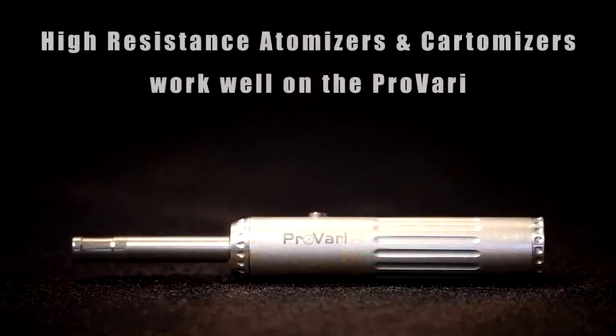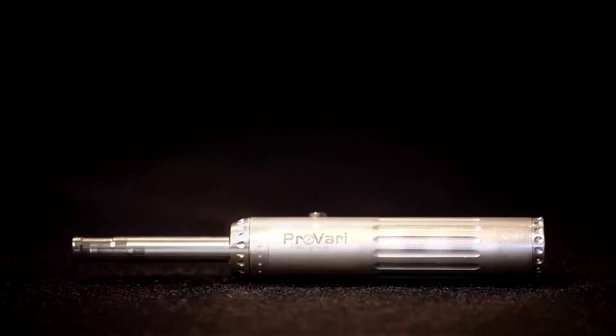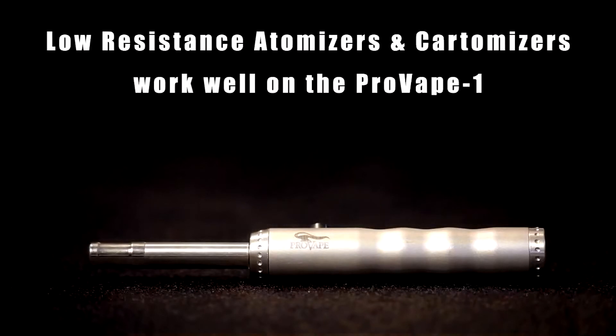We recommend using high resistance atomizers and cartomizers on the ProVari. On the smaller Provape One, we recommend using low resistance atomizers and cartomizers.